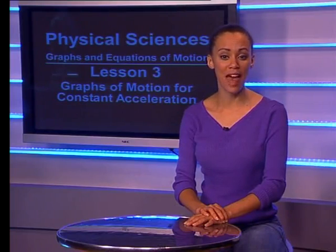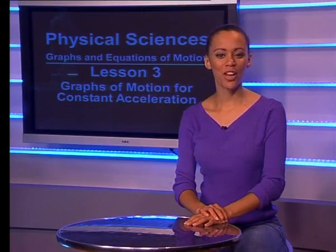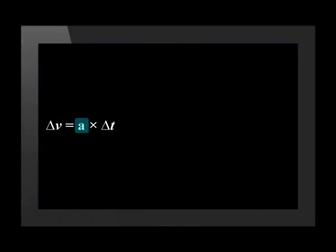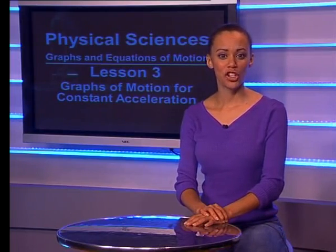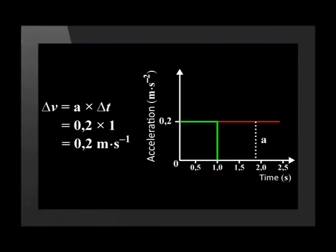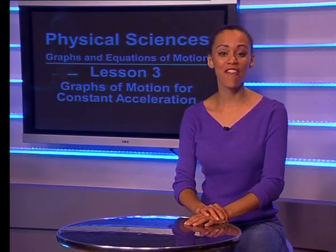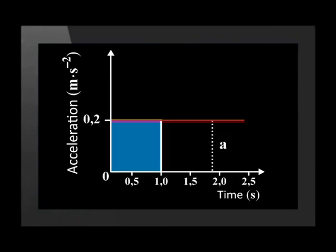Now, let us look at what information we can gather from our acceleration versus time graph. Acceleration equals the change in velocity over the change in time. We can rearrange this equation to make the velocity the subject of the formula. So, the change in velocity equals acceleration multiplied by the change in time. If we apply this equation to the graph, we multiply the time — let us say, one second — by the constant acceleration of 0.2, we get the value of velocity, which is 0.2 meters per second. We have effectively calculated the area under the graph. When we multiply acceleration by time, we actually multiply the length of the rectangle by the breadth. Therefore, the area under an acceleration-time graph gives us velocity.